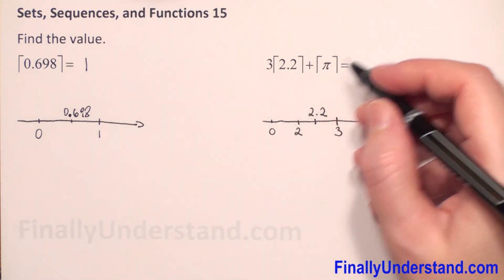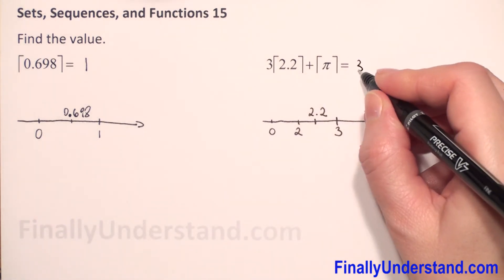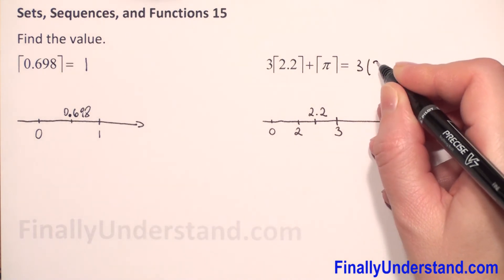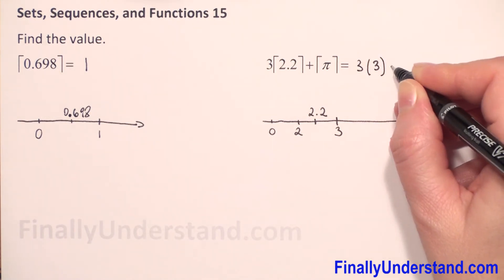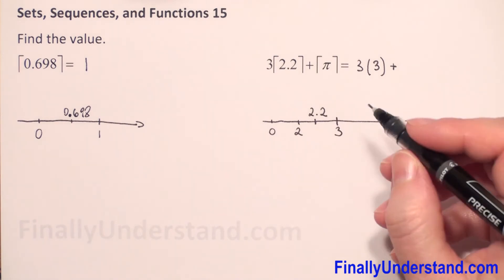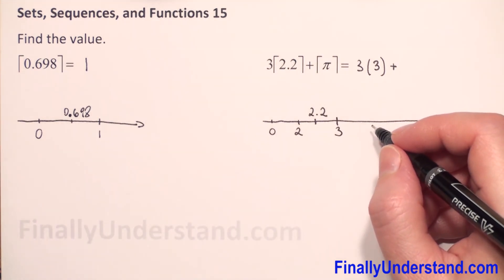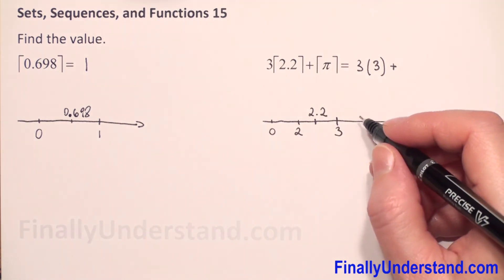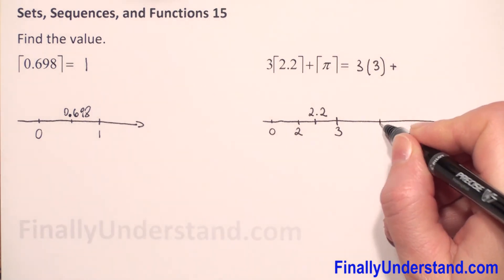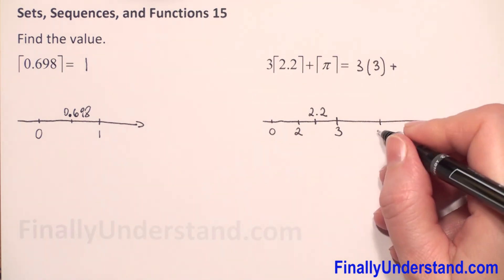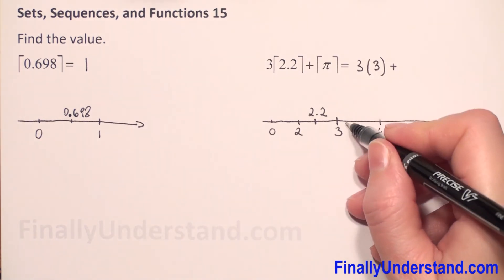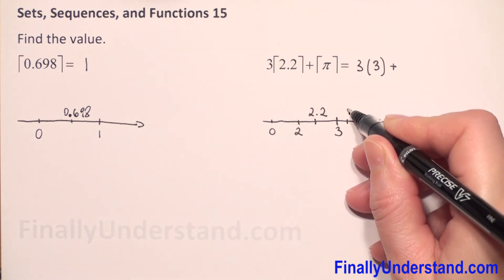So, we have to copy this 3. We have times 3. We can put in parentheses. And we have plus ceiling of π. π is equal 3.14 approximately. So, this is between 3 and 4. π will be approximately here.